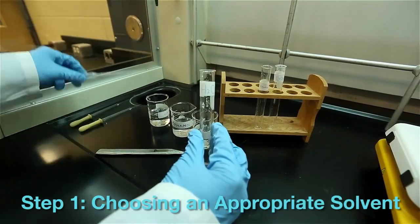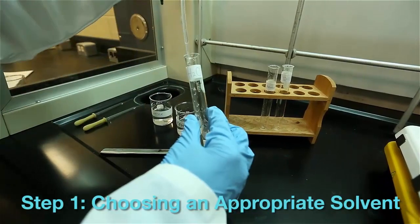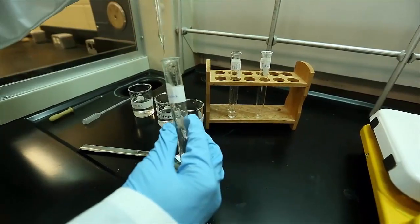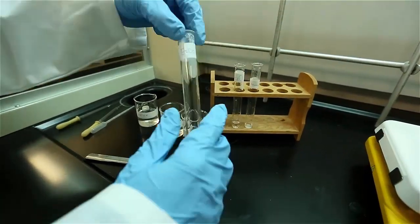The first step in recrystallization is finding the right solvent. This will involve adding a bit of the solid sample into each solution and then observing to see if the solid dissolves in the solvent at room temperature.